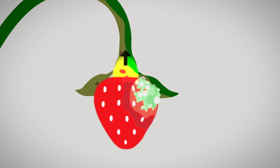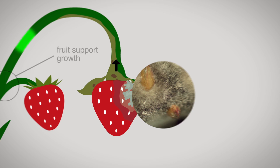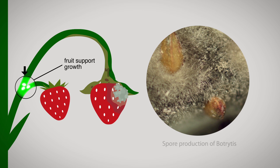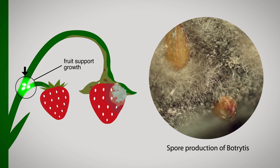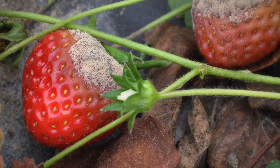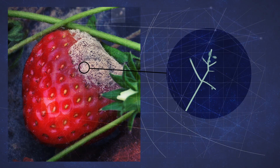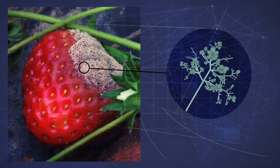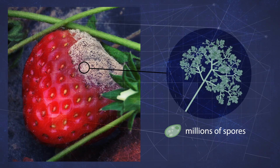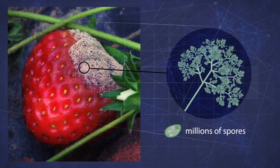Nutrients absorbed from the fruit support the growth and spore production of botrytis. The visible gray mold on strawberries is actually the forest of fungal branches on which millions of spores are typically formed.